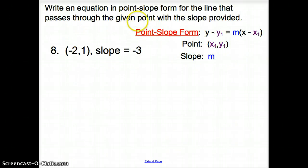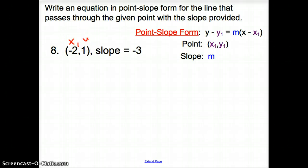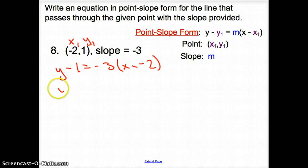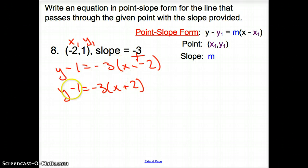For number 8, we are asked to write an equation in point-slope form for the line that passes through a given point. Point-slope form is right here. When we plug this in, we have to be very careful — these points go in for x₁ and y₁ in point-slope form. So from our equation: y minus y₁, which is 1, equals our slope of negative 3 times x minus x₁, which is negative 2. Let's clean this up: negative 3 times, and then minus a minus becomes a plus, so it's x plus 2 for our final answer.